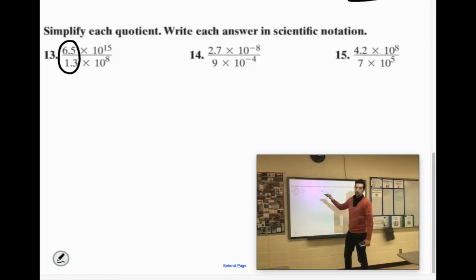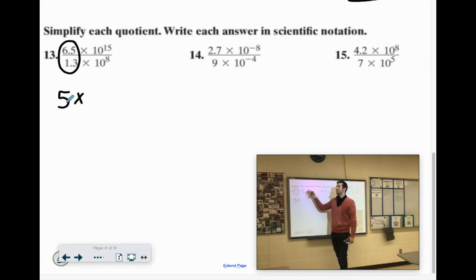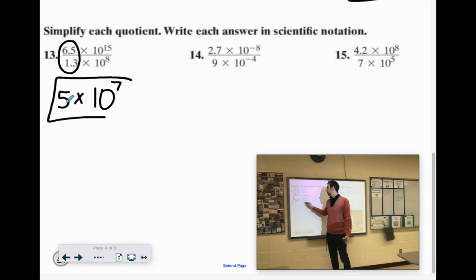So if you did 6.5 divided by 1.3 in your calculator, you'll get 5. Now remember with the 10s, because they are the same base, we just subtract the exponents. So 15 minus 8 would be 7. Does that work for scientific notation? Yeah. Cool.